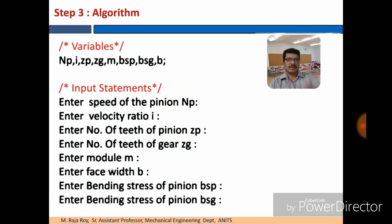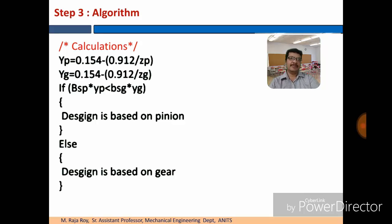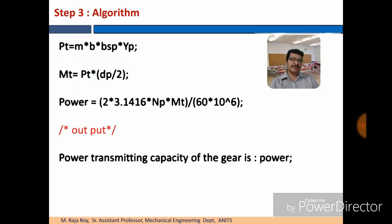Next step is writing algorithm. Declare the variables. Write the input statements. While writing the program, if you are not able to declare all the variables at the beginning, you can start writing the program. In the middle of the program, if you use any new variable, you can declare it in the variables list. Take the input statements. After that do the calculation. Then output statement.